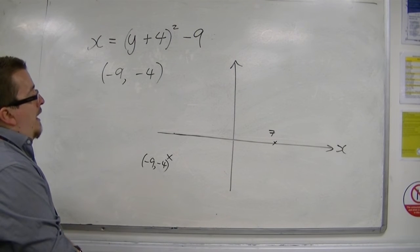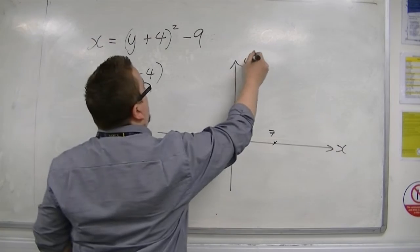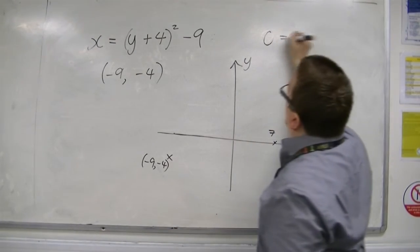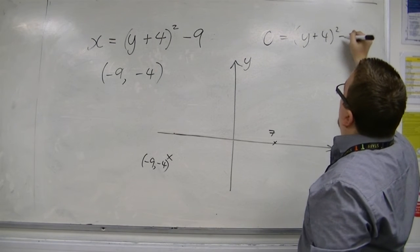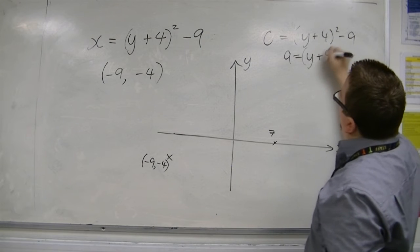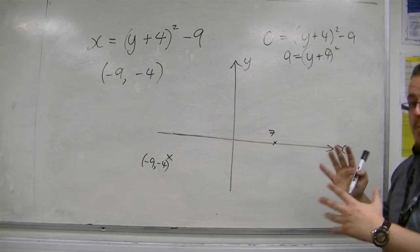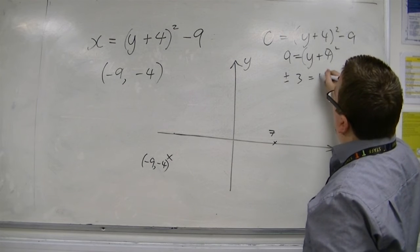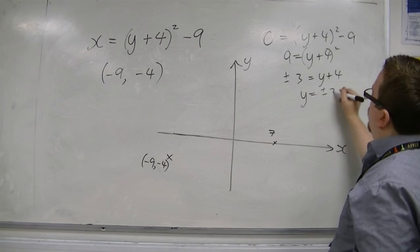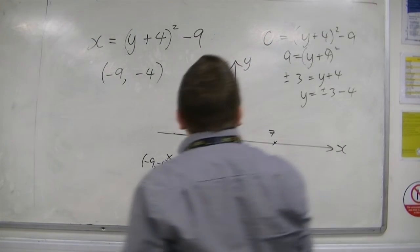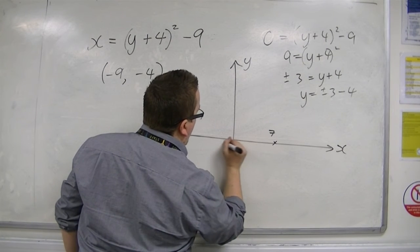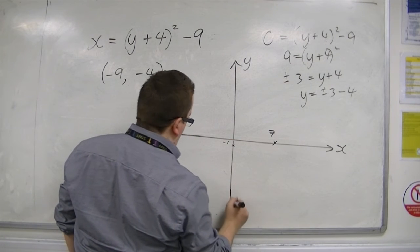I can find out where it's crossing the y-axis. That's when x is 0. When x is 0, I get y plus 4 squared minus 9, so 9 equals y plus 4 squared. Square root both sides — plus or minus 3 equals y plus 4. So y equals plus or minus 3 take away 4, which gives minus 1 and minus 7. So the y-axis crossings are at minus 1 and minus 7, somewhere down here.